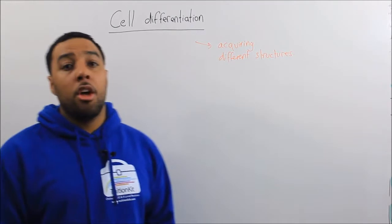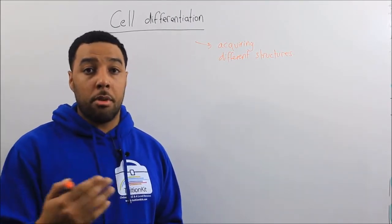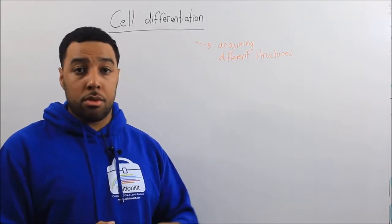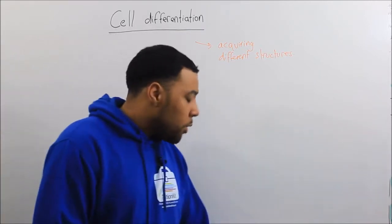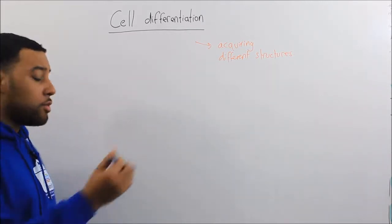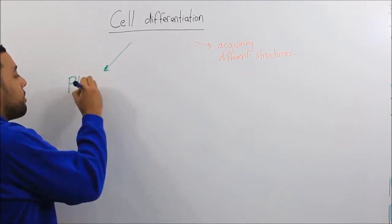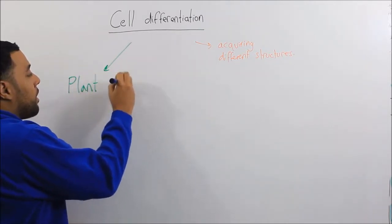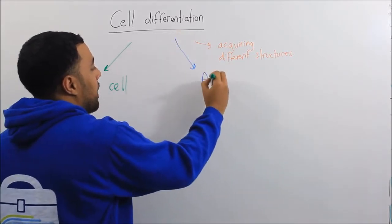We've seen in our previous video that some cells can become sperm cells, some cells become muscle cells, we've got nerve cells. Now when we consider cell differentiation, we think of two types of cells: we think of a plant cell and we also think of an animal cell.